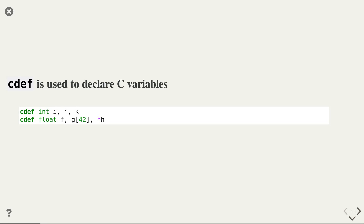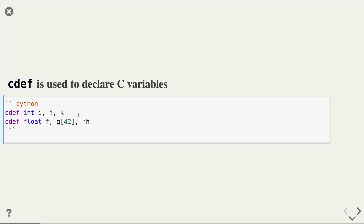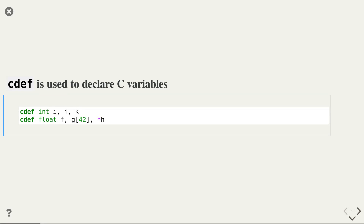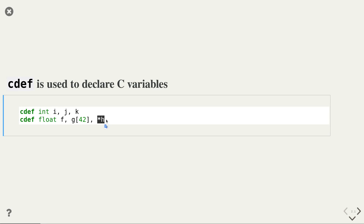For instance, if you want to declare three integer variables i, j, and k, you use the cdef keyword followed by the type that you want to use — in this case int for integer — followed by the names of the variables that you want to declare. In the same way, you can also declare a floating point value f. In addition, you can also declare types that are not directly available in Python. For instance, here we use the C syntax to declare an array of 42 floats, and here we use the star syntax to declare a pointer to a floating point value.